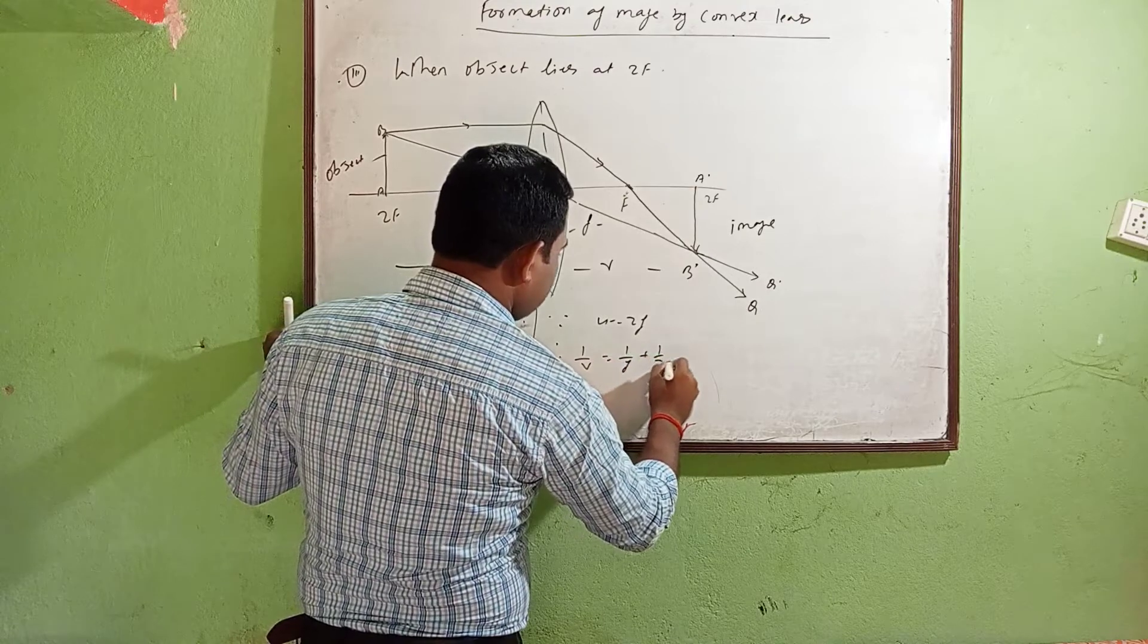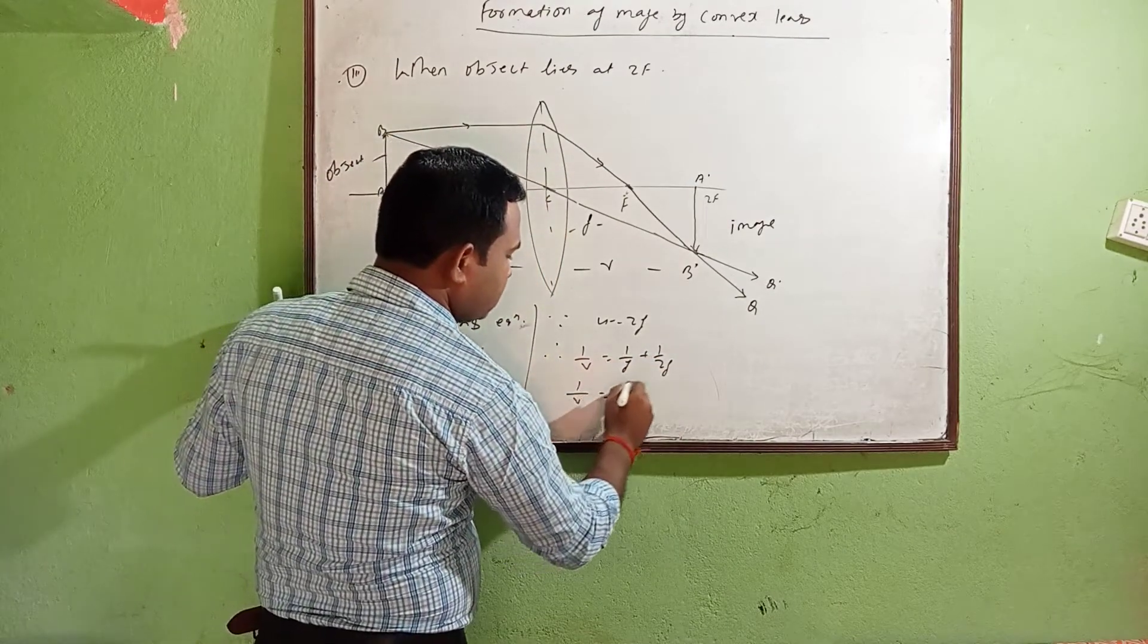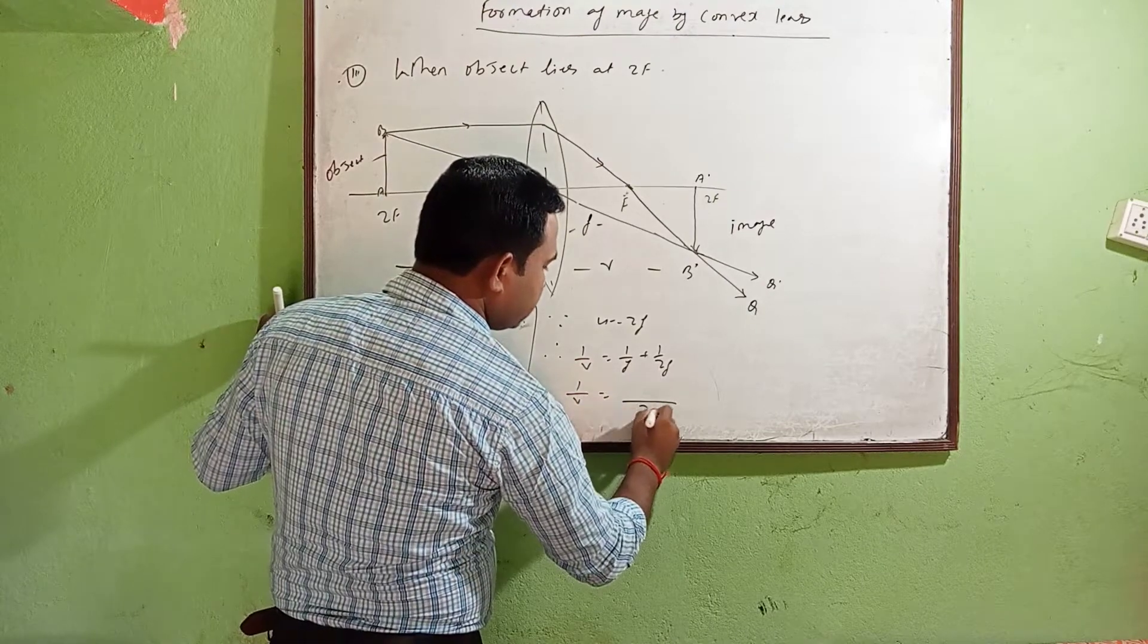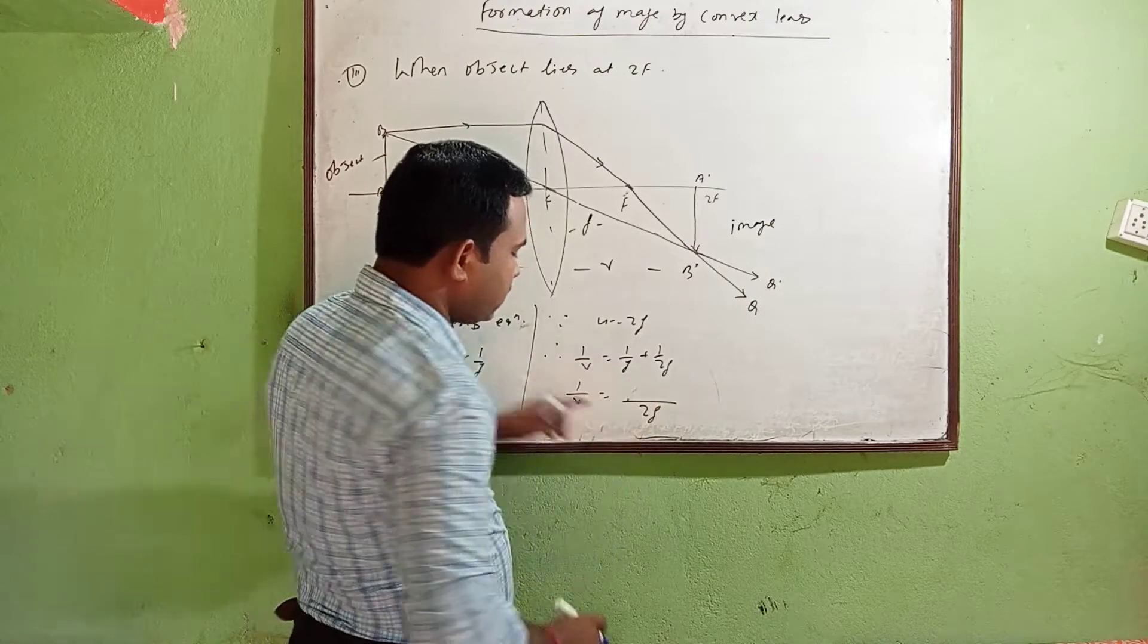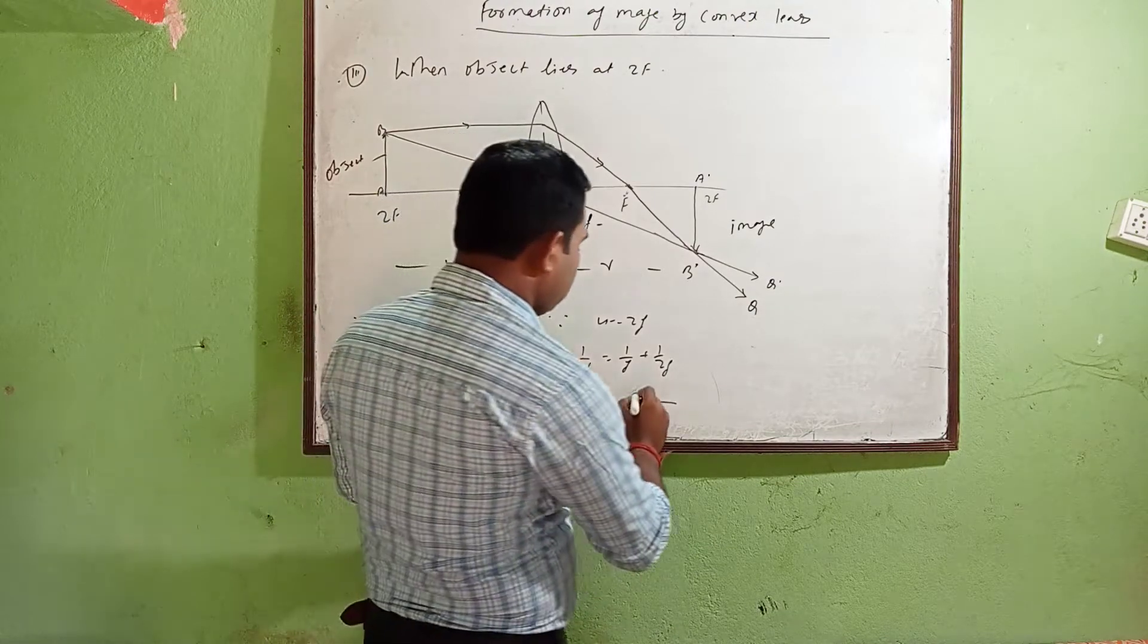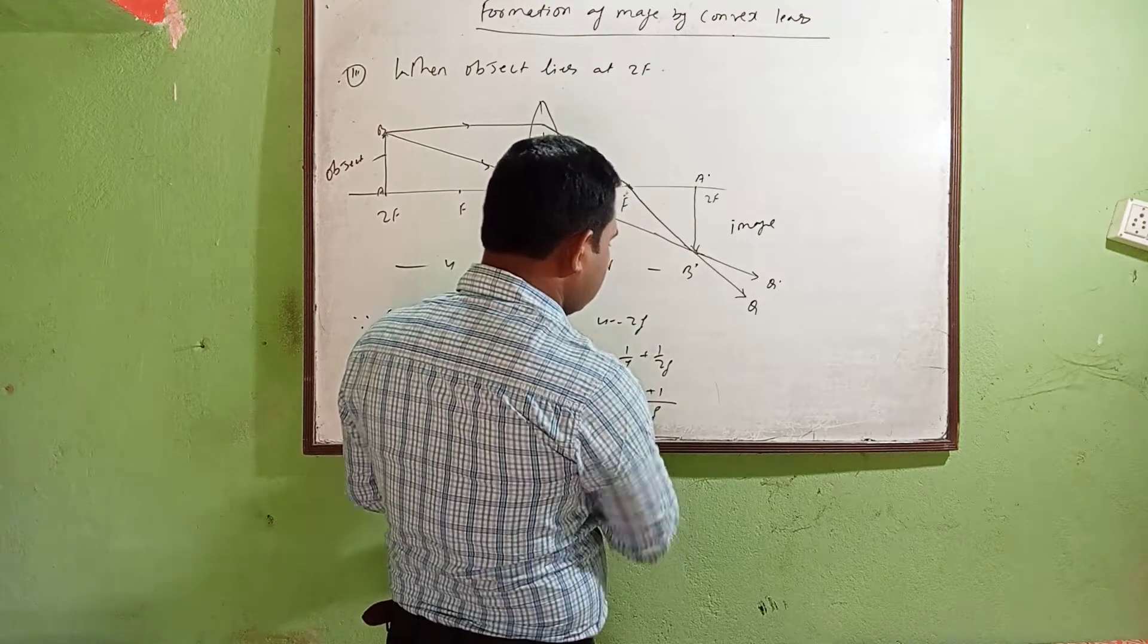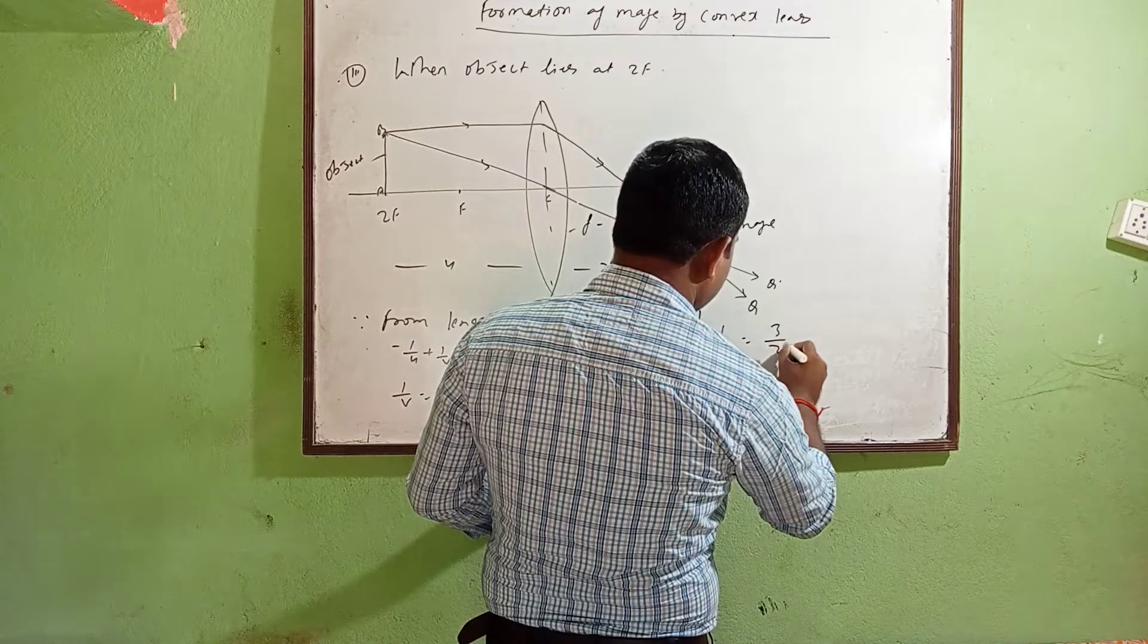You take the LCM. 1/v equals, you will take LCM, here will be 2f and here will be f. Take LCM 2f, so f and f will cancel out. Here will be 2 + 1. Then you will write here 1/v = 3/2f.